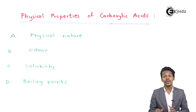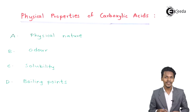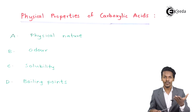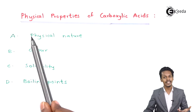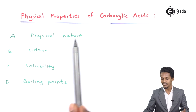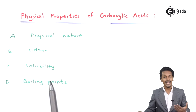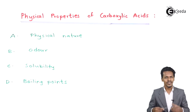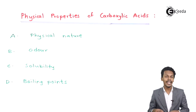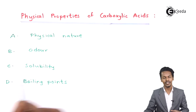In this topic we are going to discuss about the physical properties of carboxylic acid. For that we have a few points, and those are physical nature, odor, solubility, and boiling points. So now let us cover each point, starting with the first one — physical nature.